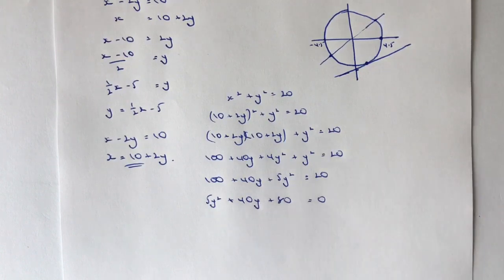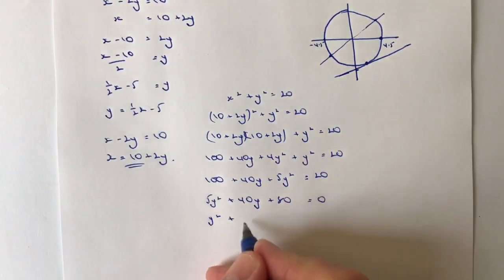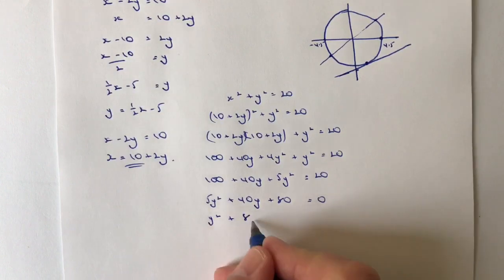I've got these coefficients 5, 40, and 80. It'd be kind of remiss of me not to divide through by 5 just to make my life a little bit easier, so I can actually write this very same equation as y squared plus 8y plus 16 equals 0.